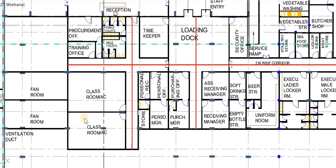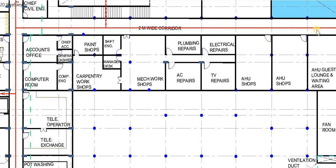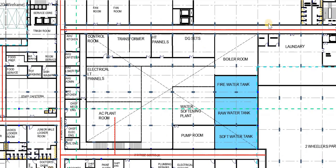This section on the basement floor plan is for placement and training, with a training office, procurement office, and two classrooms for training. This section on the basement floor is the workshop area, which consists of paint shops, carpentry shops, mechanical workshops, AC repairs, TV repairs, electrical repairs, and plumbing repairs.